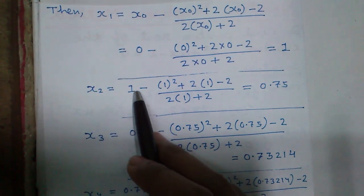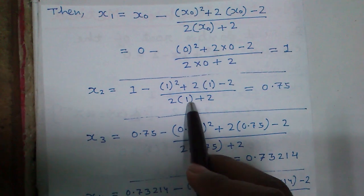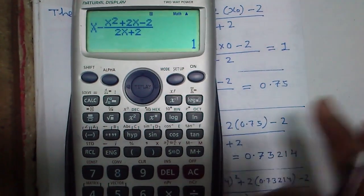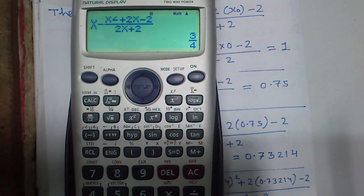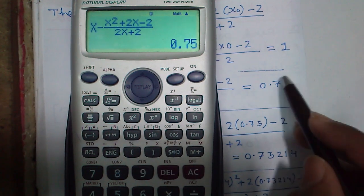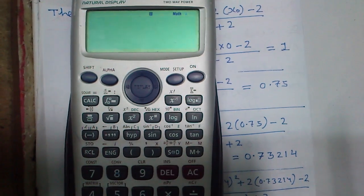And this 1 will be taken as input for next calculation. For x_2: 1 minus (1 square plus 2 times 1 minus 2) divided by (2 times 1 plus 2). So in calculator you do not have to write, simply calc and x equals 1. It gives you 3/4, press S to D: 0.75. Again for next calculation x equals 0.75.